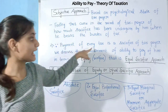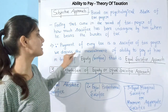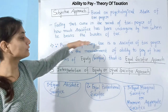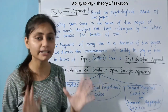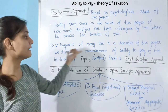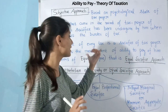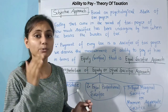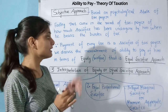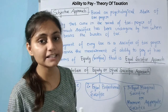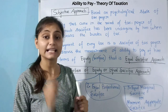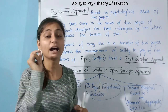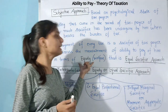Since payment of every tax is a sacrifice of the taxpayer, we discuss the measurement of ability to pay in terms of equity. Equity here means a just decision — since you are making a sacrifice, that sacrifice should be just. It should not be that you had no ability to pay but still had to pay tax. We also call this the equal sacrifice approach.